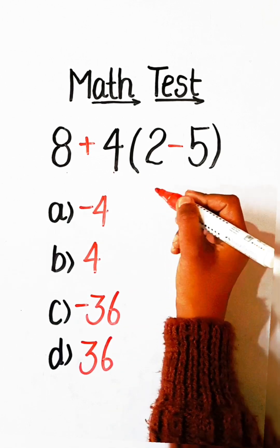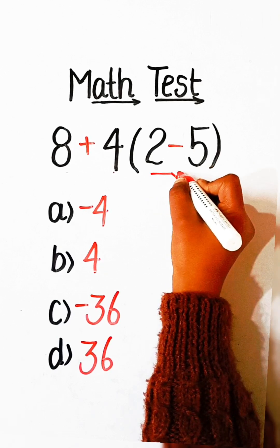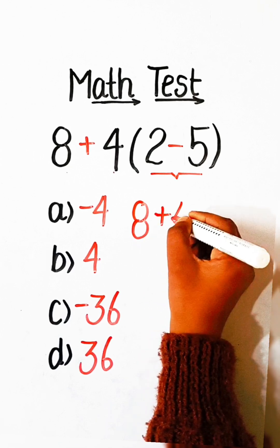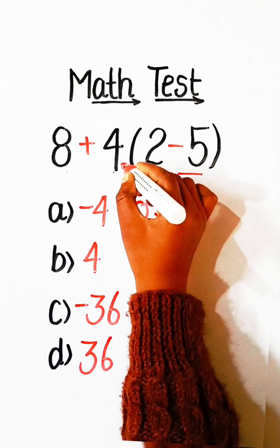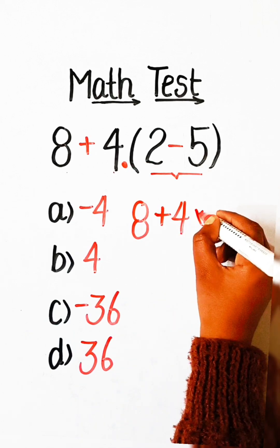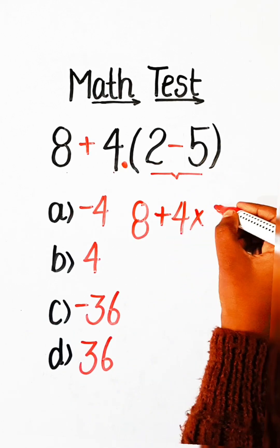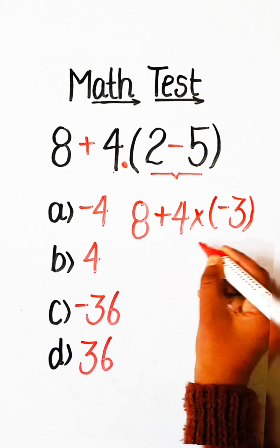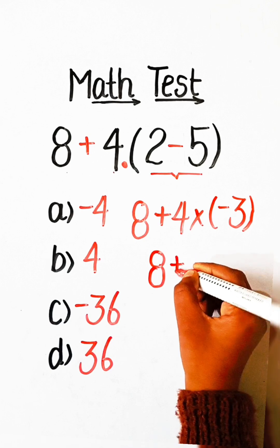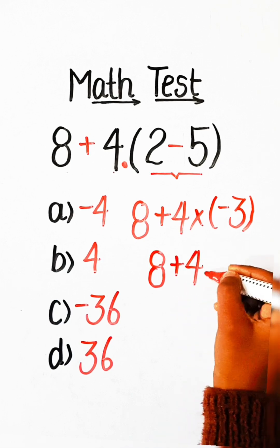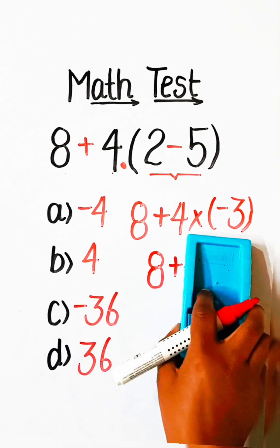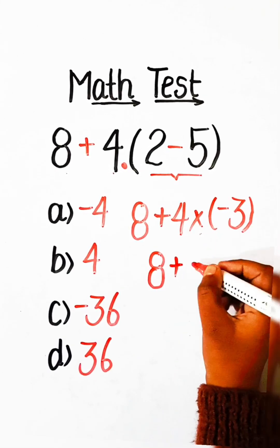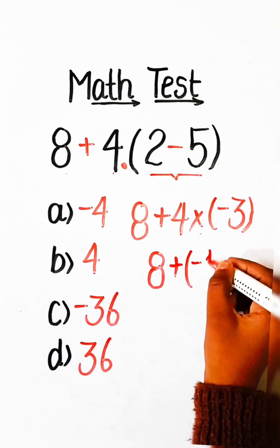So let's solve this. First we have to solve the bracket, so we write here: 8 plus 4 multiply by — 2 minus 5 is minus 3. So 8 plus 4 multiply by minus 3 is minus 12.